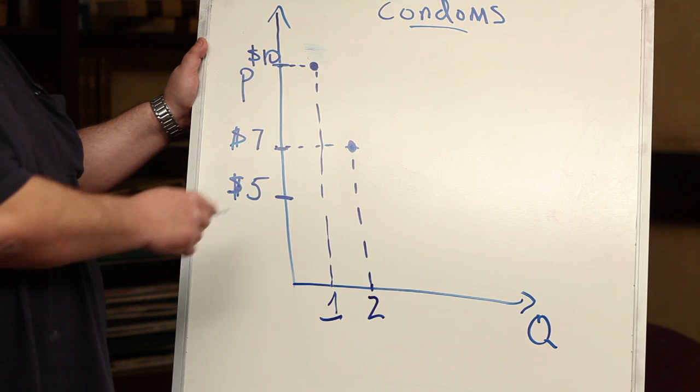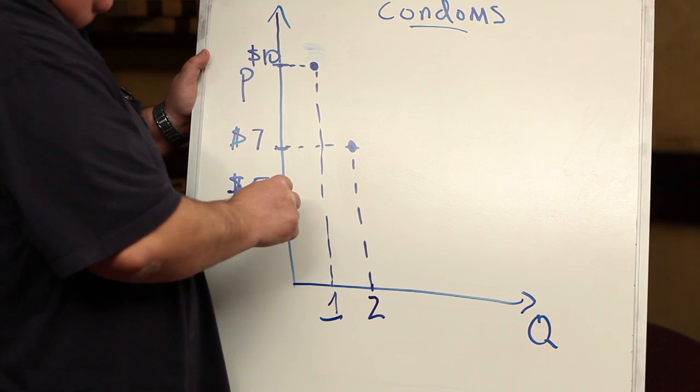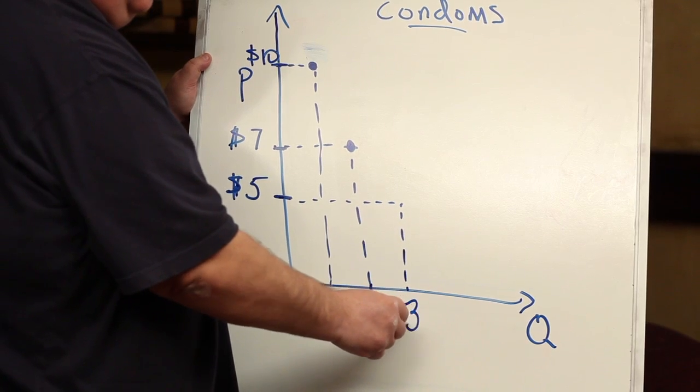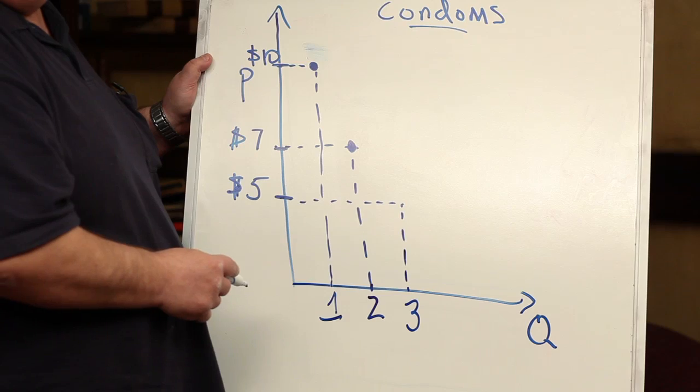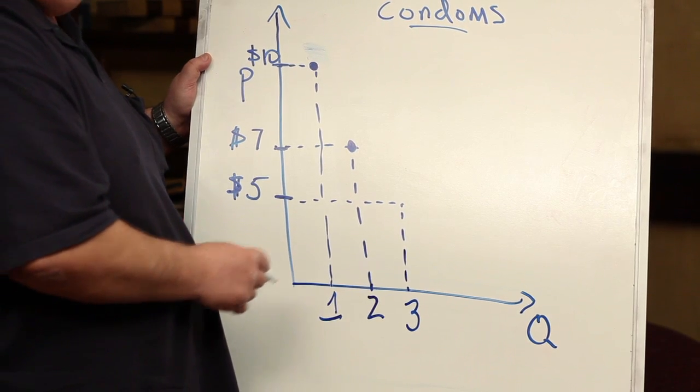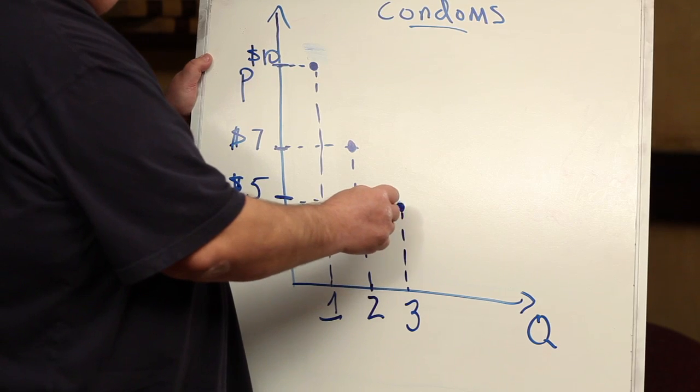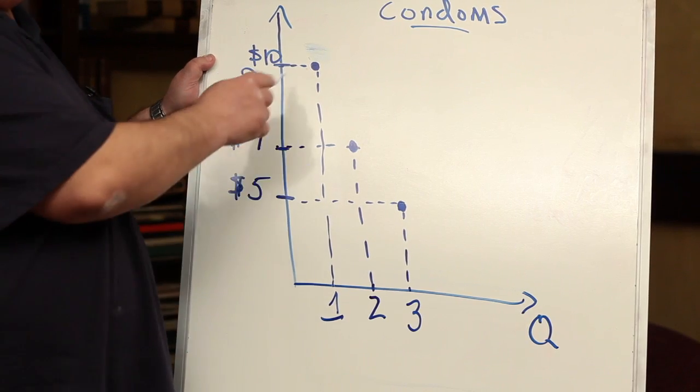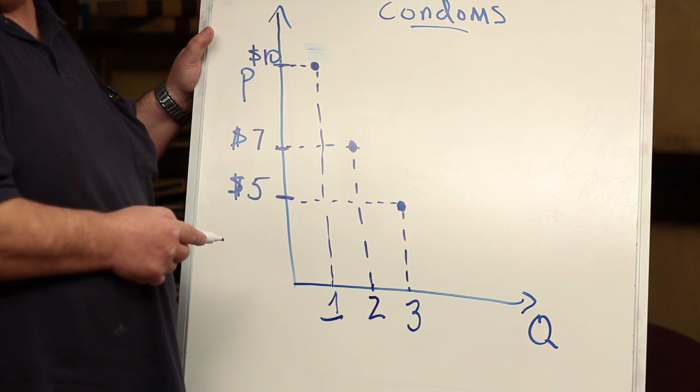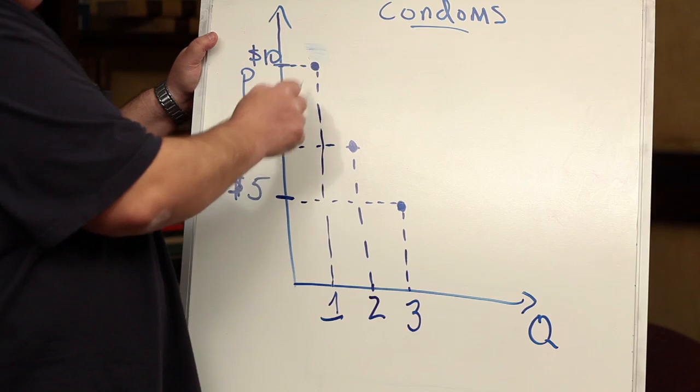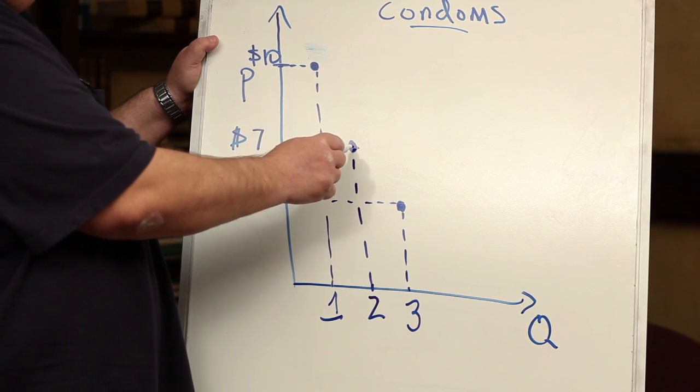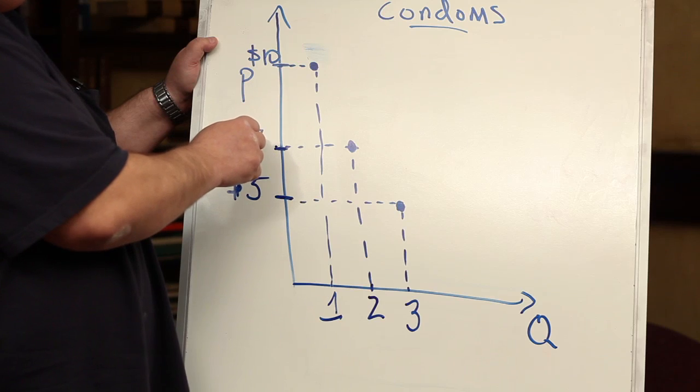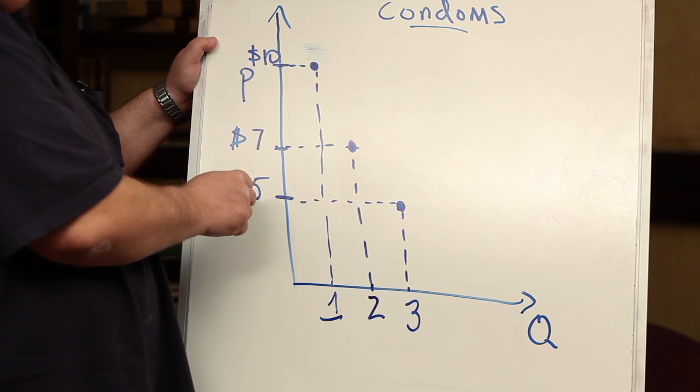And at a price of five dollars, the quantity demanded would be even larger. In fact, it would be three packs that you'd purchase at your visit to the drug store. I'll just draw that in over here. What you're looking at now on the graph is three different quantity demanded levels measured out on the horizontal from one to two to three, as prices drop from ten to seven to five dollars.